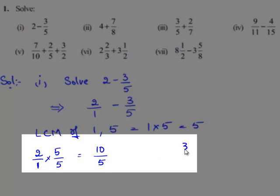Now for the equivalent fraction of 3 by 5: since 3 by 5 already has 5 as the denominator, it remains the same.